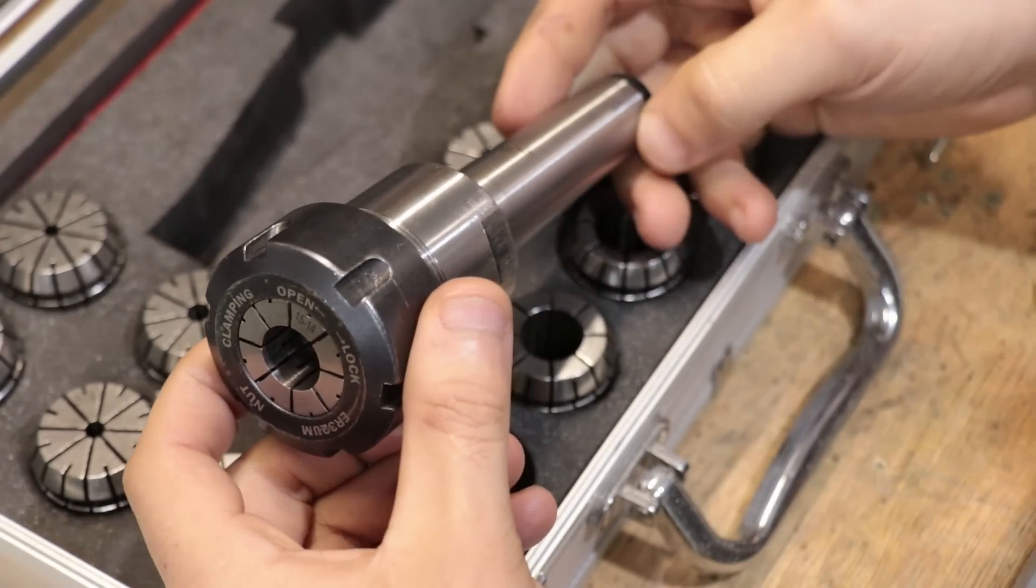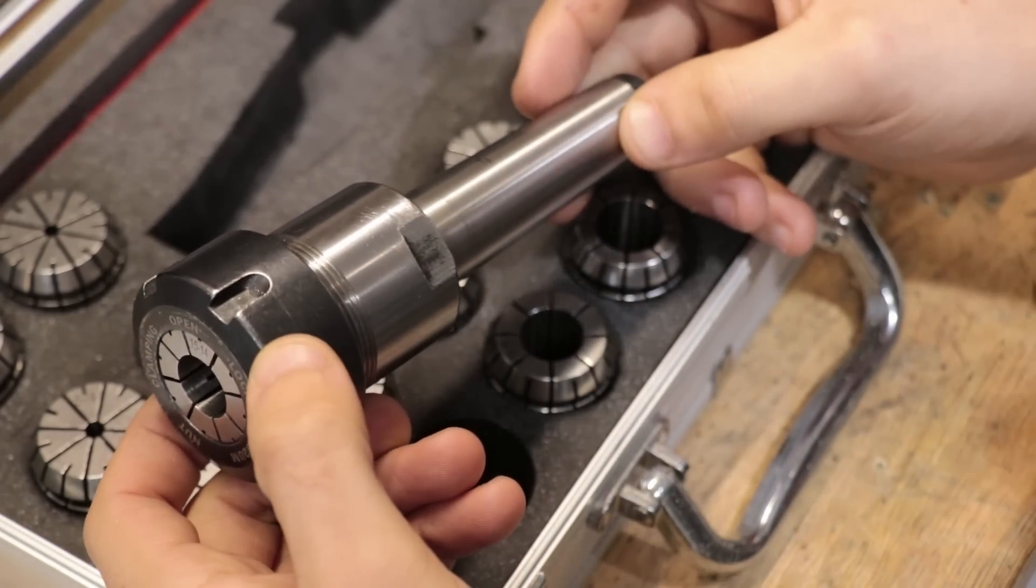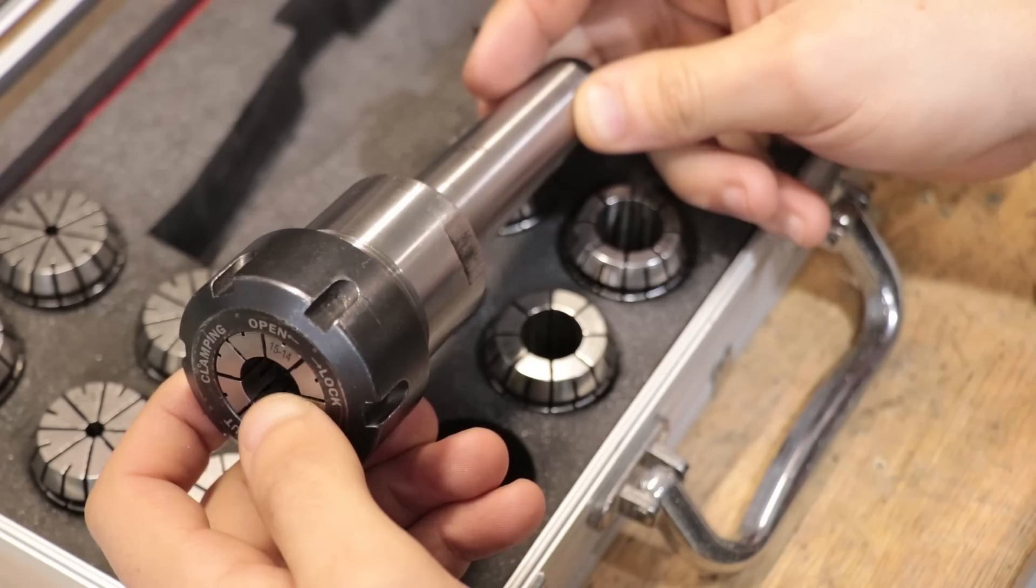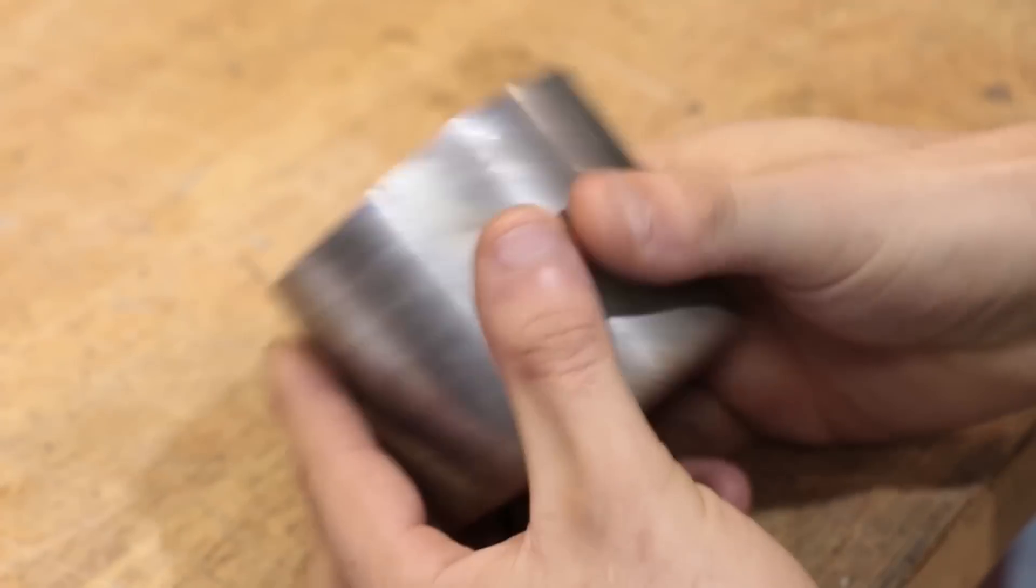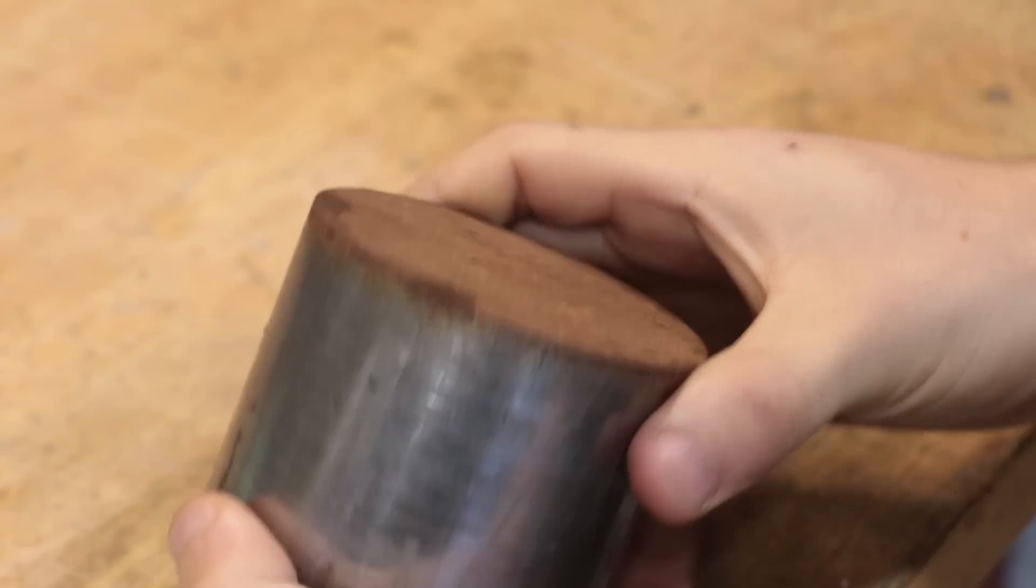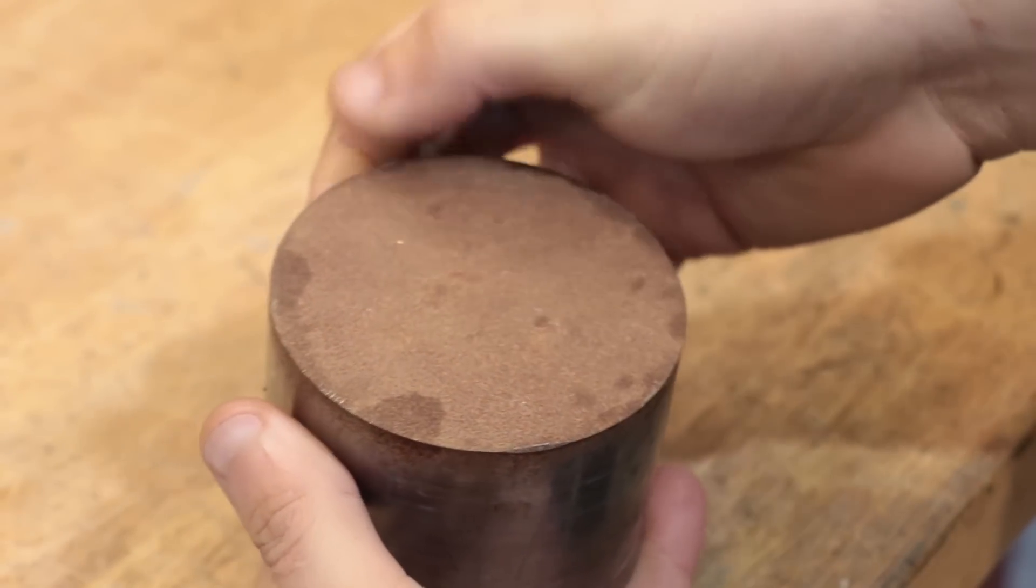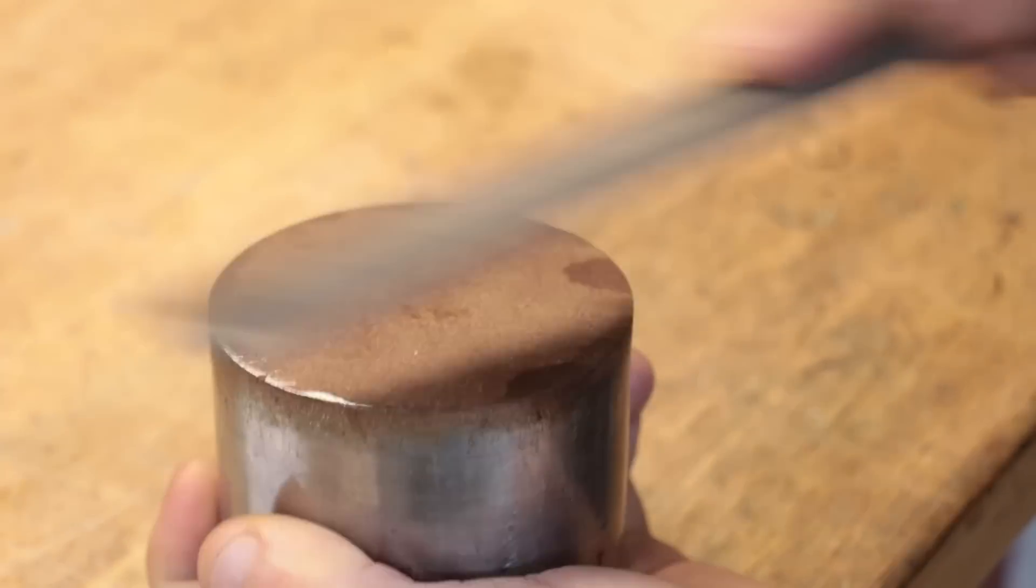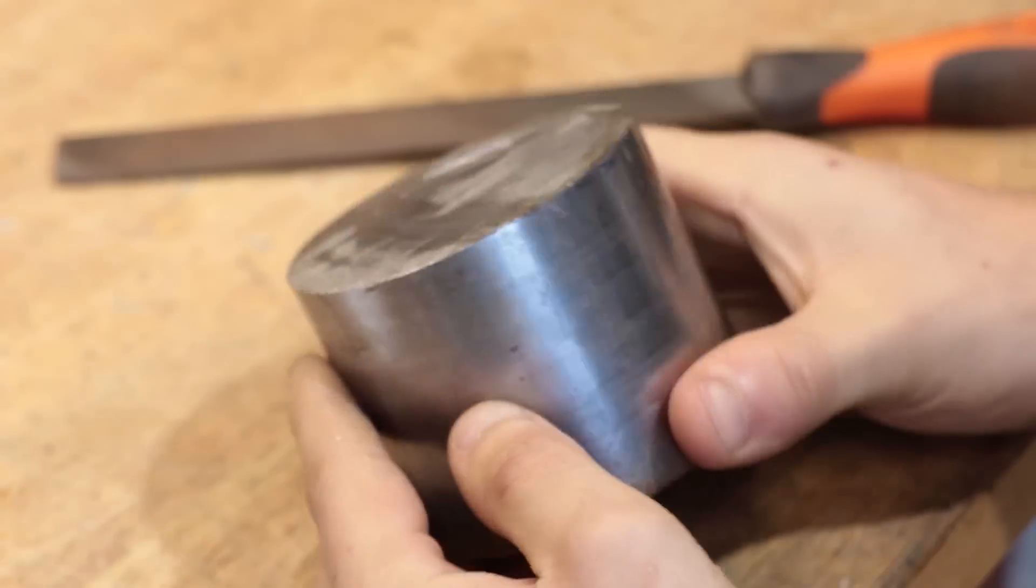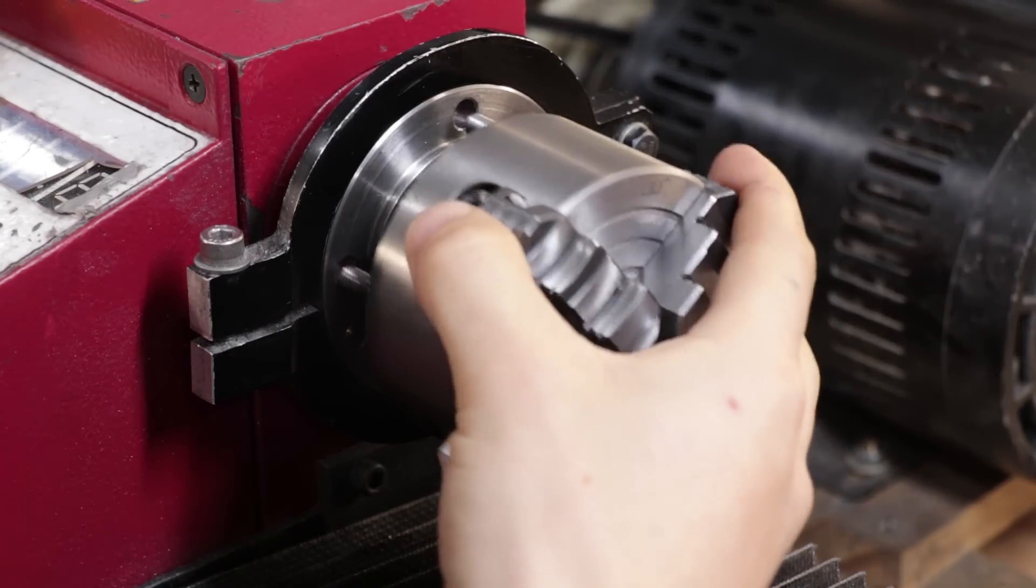So what I thought I'd do is go ahead and make my own collet chuck that mounts onto the spindle nose like all my other chucks do. Now to machine it, I'm going to use a piece of 80 millimeter medium tensile steel which should be good enough for the job. So let's get started.